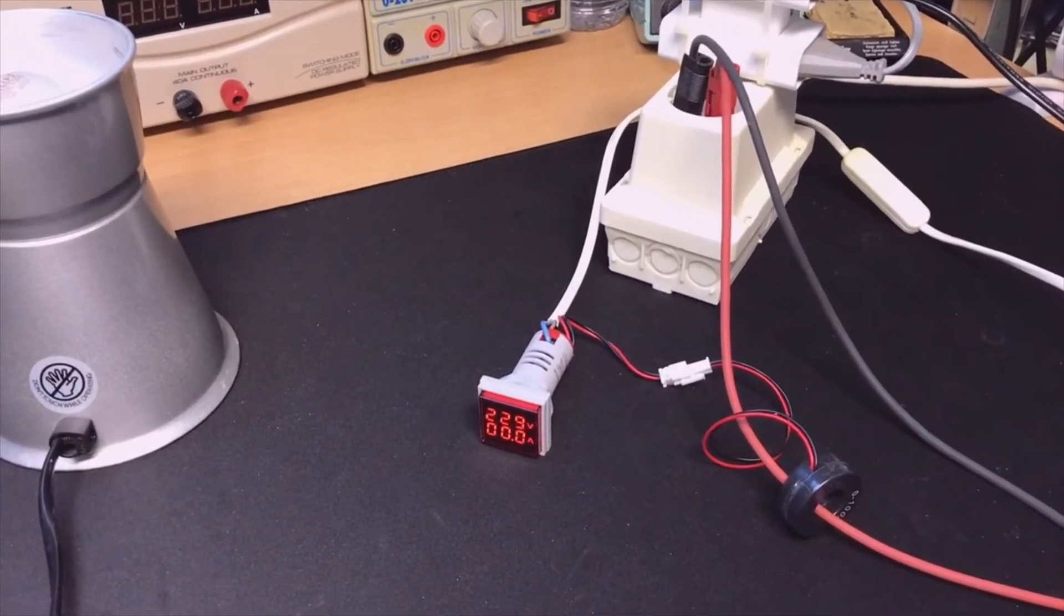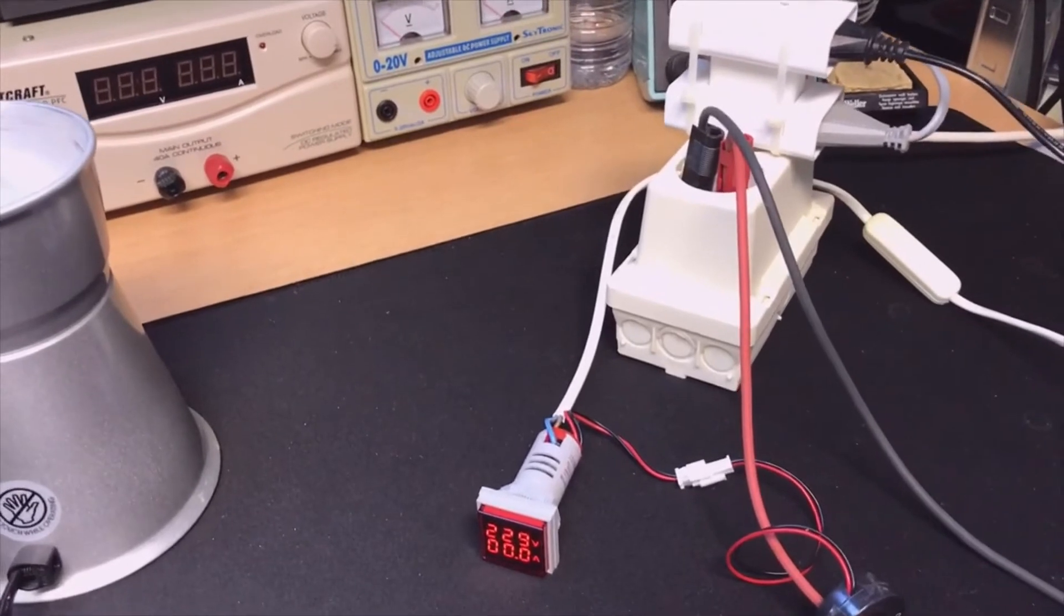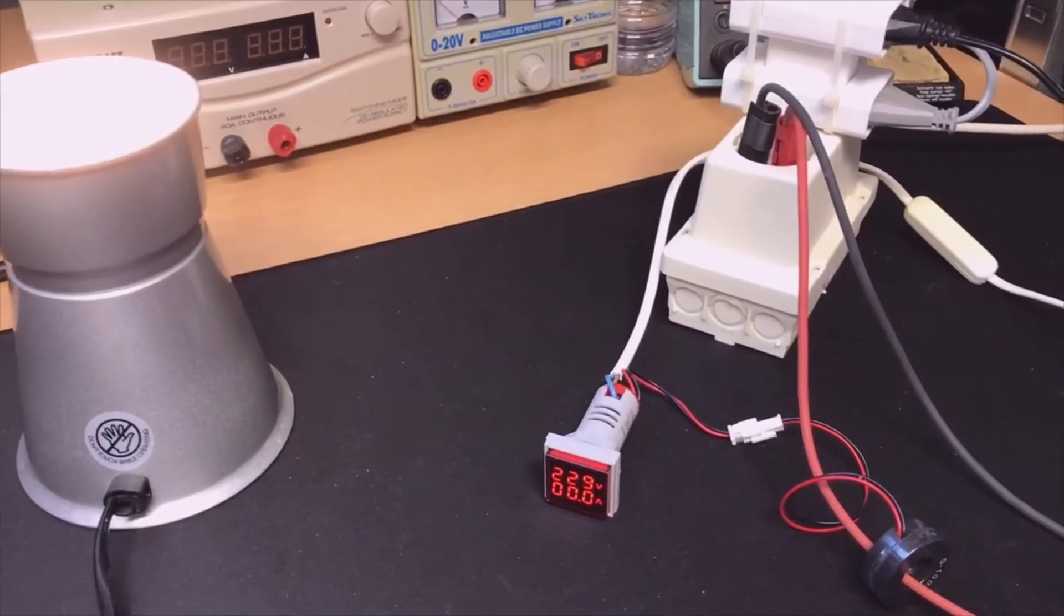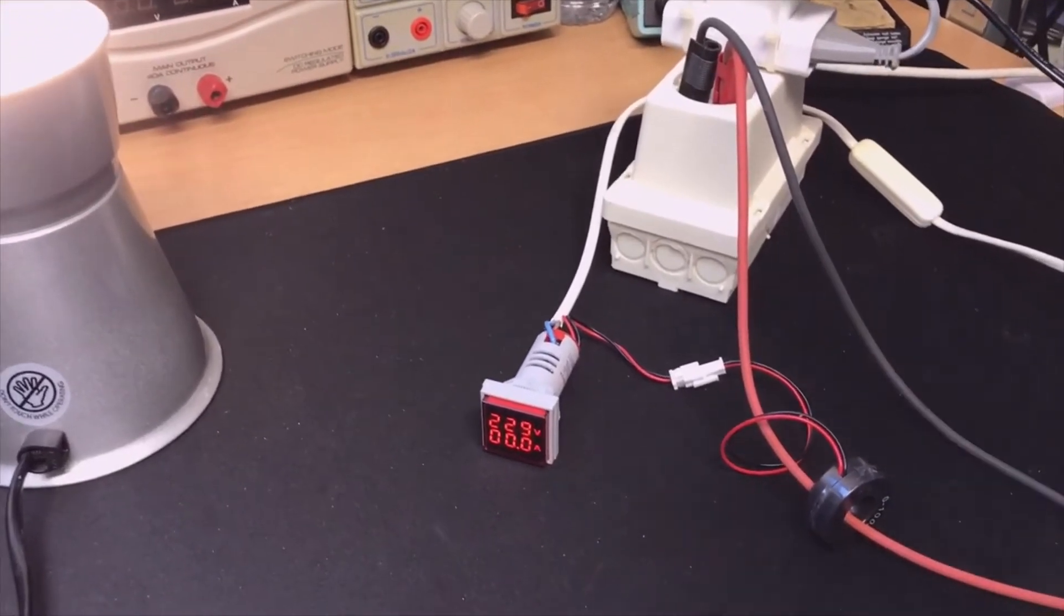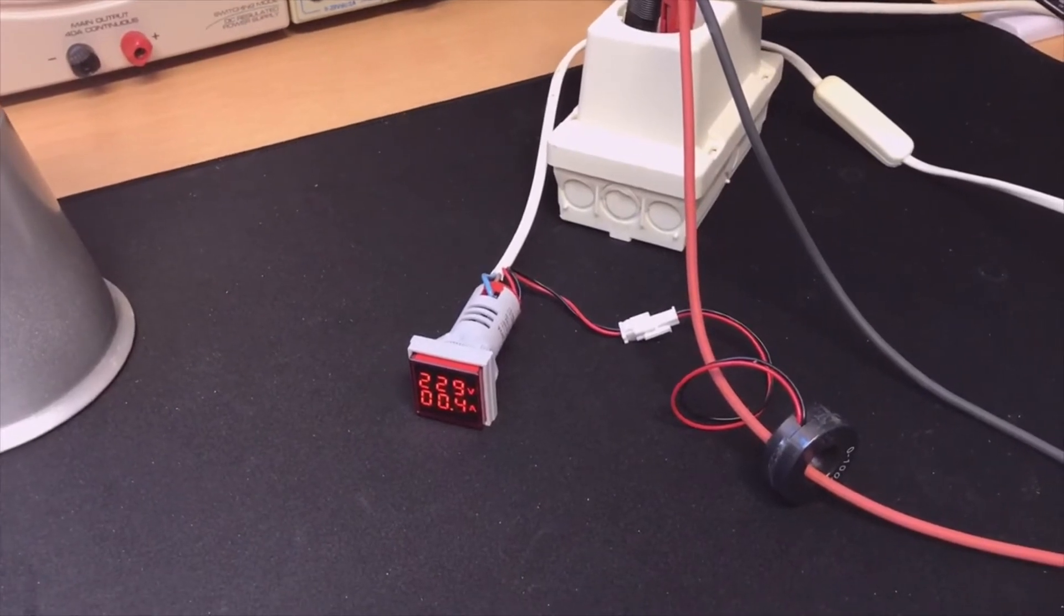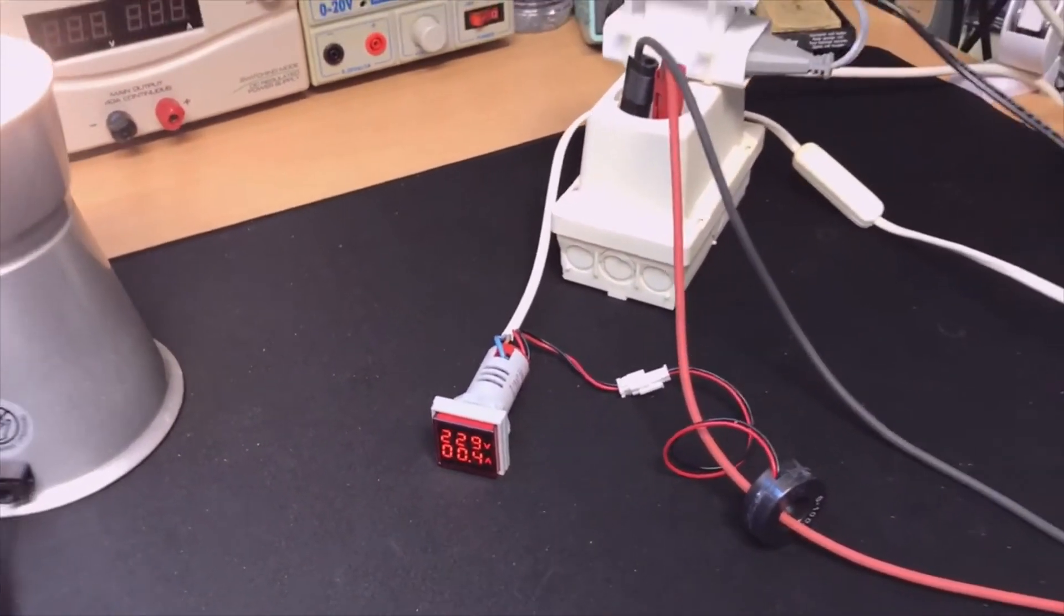You just put one of the wires through the round coil and then you will see it. It takes a while but here it goes - 0.4 amps. And I lower the load, you'll see it will go down.